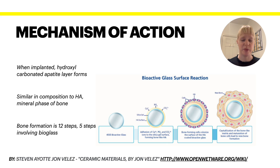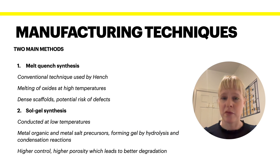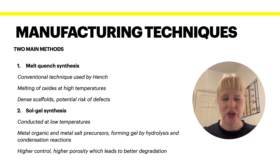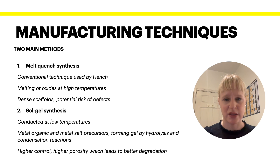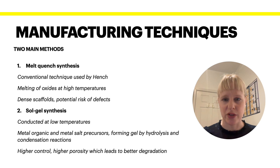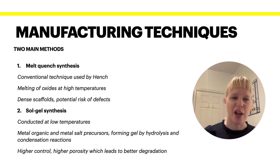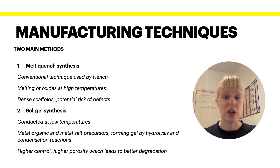There are two main manufacturing methods. The first is the conventional melt-quench synthesis used by Hench and colleagues, where the component oxides are melted at very high temperatures, yielding very dense scaffolds but with a potential risk of defects. In contrast, sol-gel synthesis is conducted at low temperatures using metal-organic and metal-salt precursors, forming a gel through hydrolysis and condensation reactions, giving higher control and higher porosity.